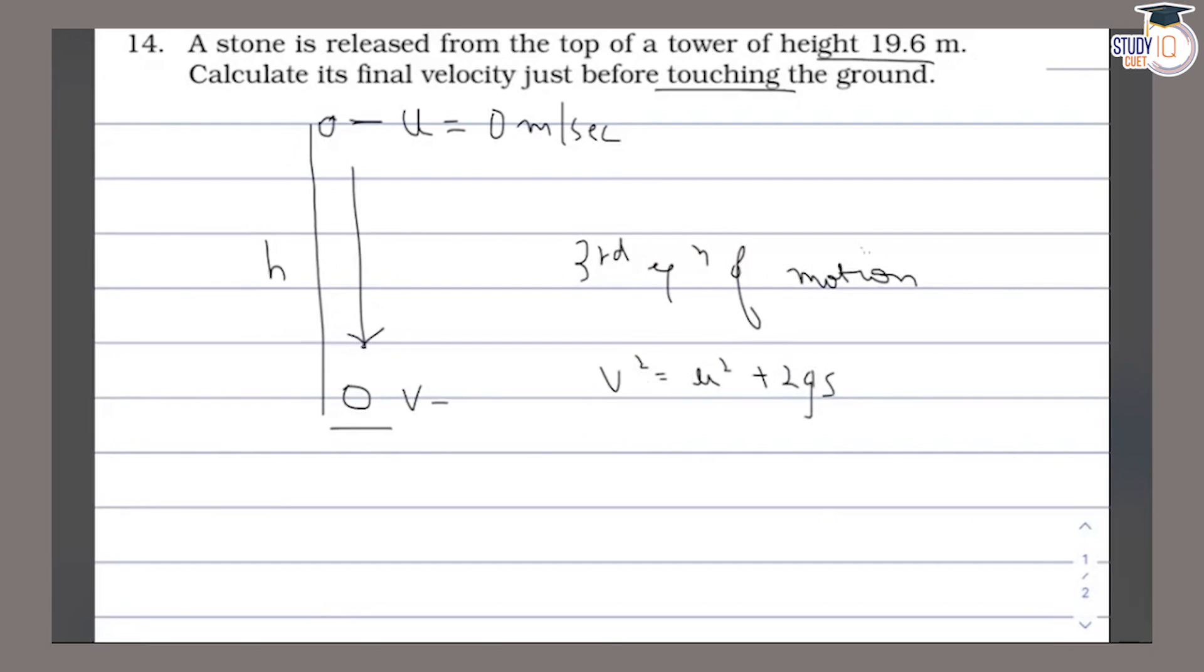What is the third equation of motion? The third equation of motion is v² = u² + 2gs. This is our third equation of motion. Here, s is our height or distance.